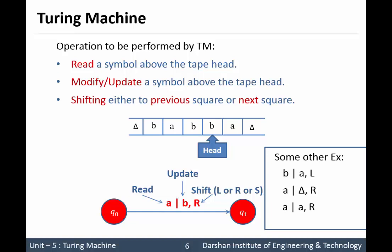If you don't want to update any cell, then you write the same symbol in the update operation. For example, A is replaced by A, so there will be no change in the cell. Another example: small a replaced by capital A with S means A is replaced by capital A and you do not need to move in any direction.